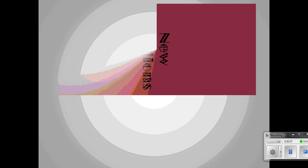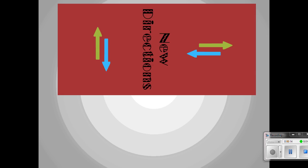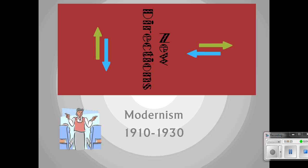Welcome to the second to the last lecture on American Literary History. We're starting with a clean slate with the new century, and we're going to call this era Modernism. You can see we're moving in new directions with Modernism. It takes place during a relatively short period of time, 1910 to 1930.